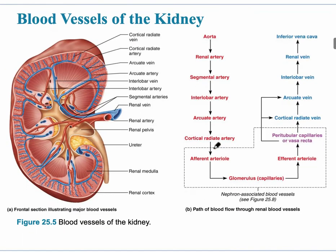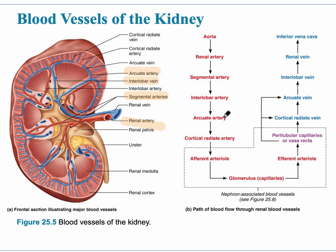The blood vessels going through the kidney begin at the aorta, the large blood vessel coming from the heart, leading to the renal artery going into the kidneys. The renal artery leads to the segmental artery, then the interlobar artery — located between the lobes of the kidney in the renal column area. That leads to the arcuate artery, which is found between the renal cortex and the renal medulla. Then that leads to the cortical radiate artery, which radiates throughout the cortex.